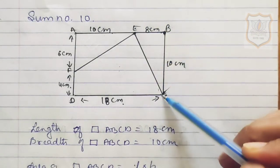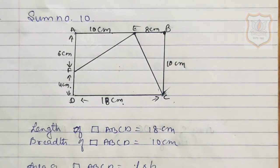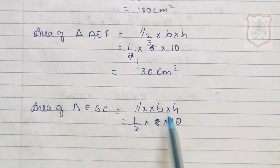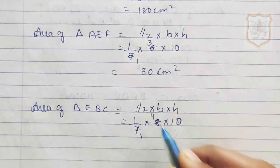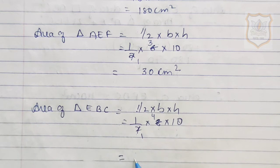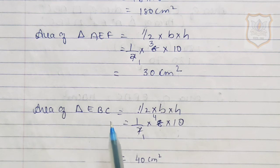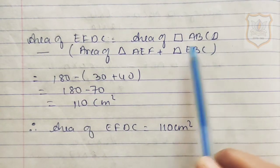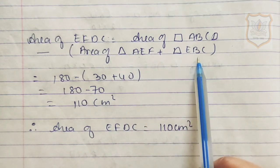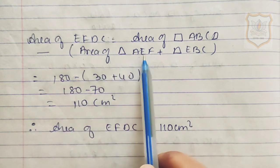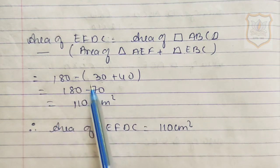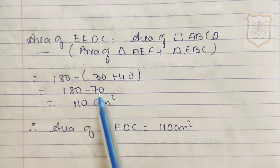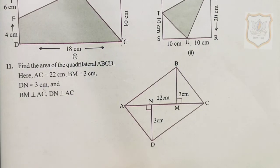Area of triangle EBC: base is 8 cm and height is 10 cm. So half into 8 into 10 equals 40 cm square. Area of EFDC equals area of rectangle ABCD minus the bracket area of triangle AEF plus area of triangle EBC. That is 180 minus 30 plus 40, which is 180 minus 70, equals 110 cm square. Therefore the area of EFDC is 110 cm square.